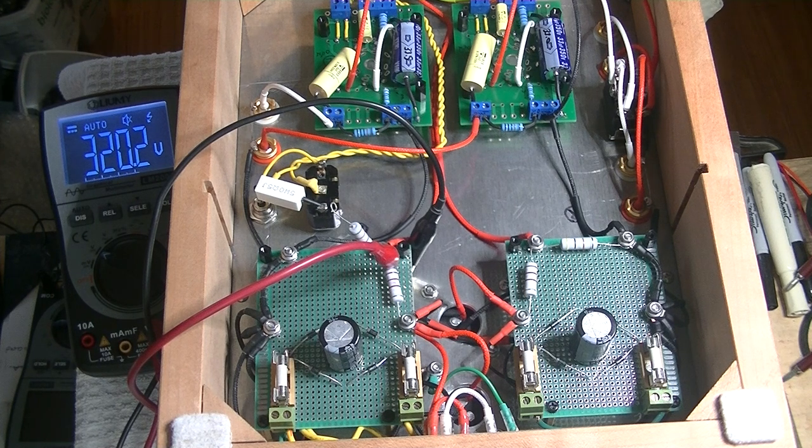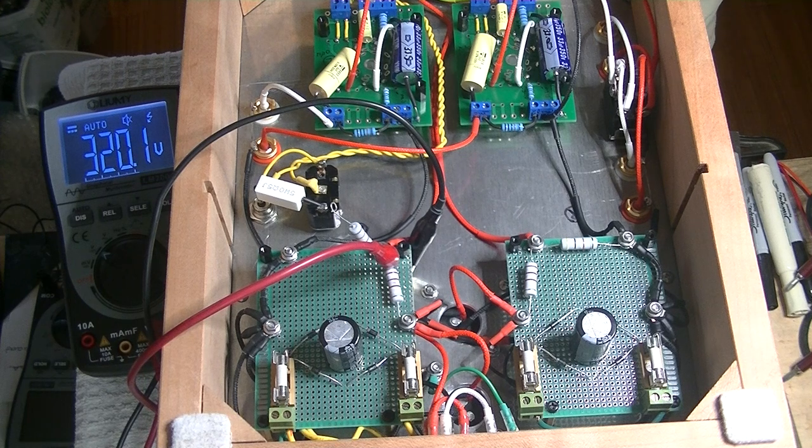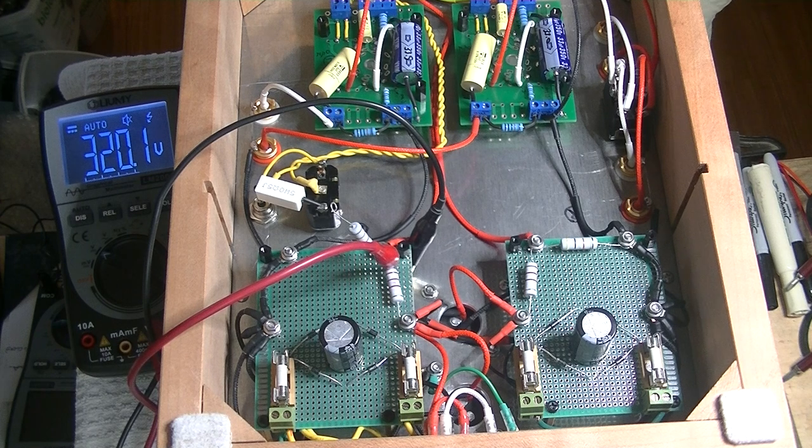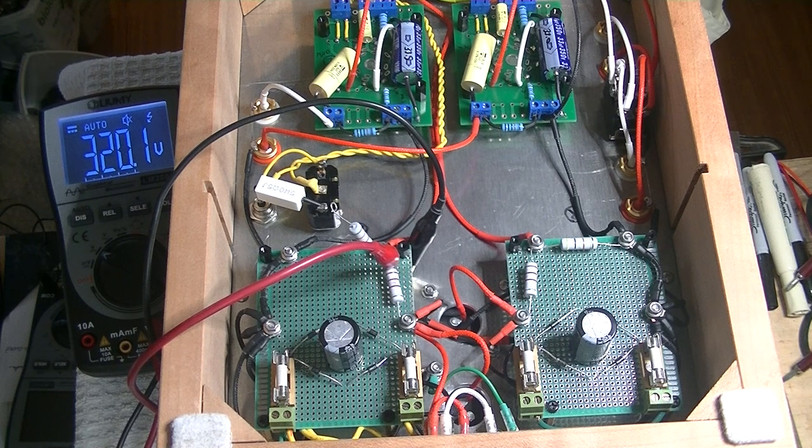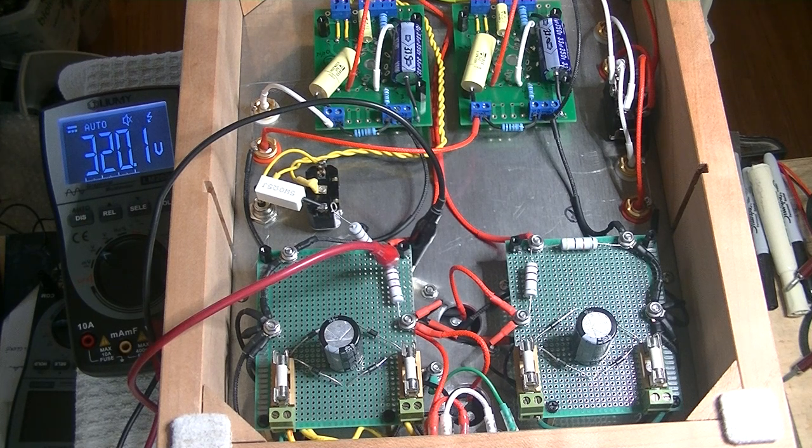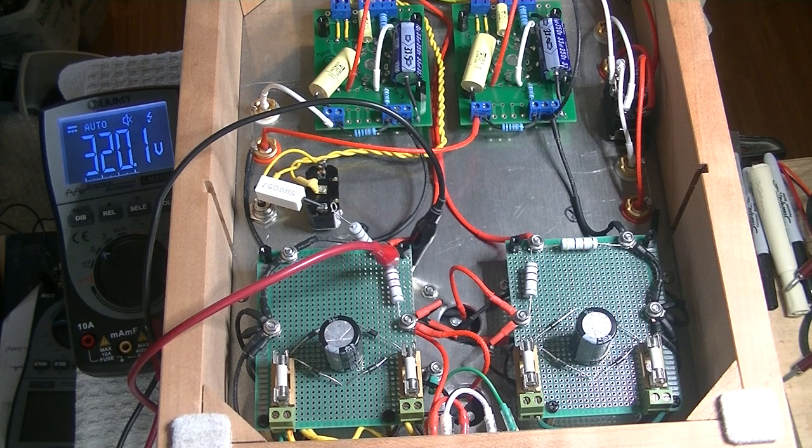So first off, if you need to do anything, and I mean anything to your tube amp, make certain it's unplugged. With an IEC connector, that's easy. With a hardwired power cord, trace the cord from the amp back to the plug end and make sure that it's not plugged in. Is it safe to proceed now? No. First you need to discharge the power capacitors and check for the voltage.